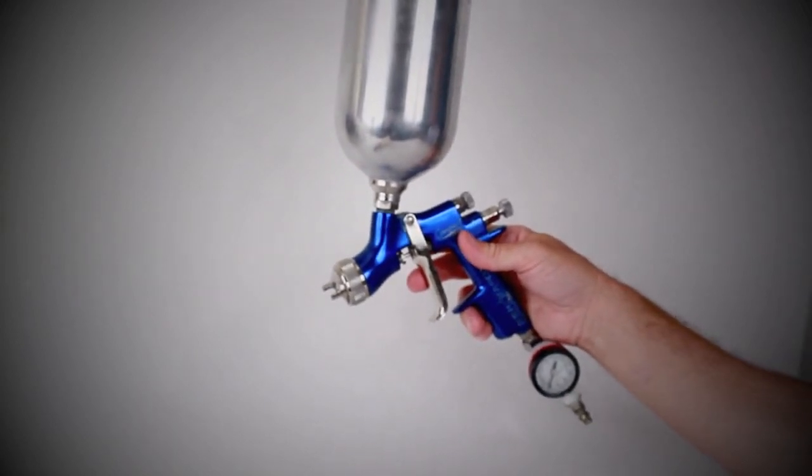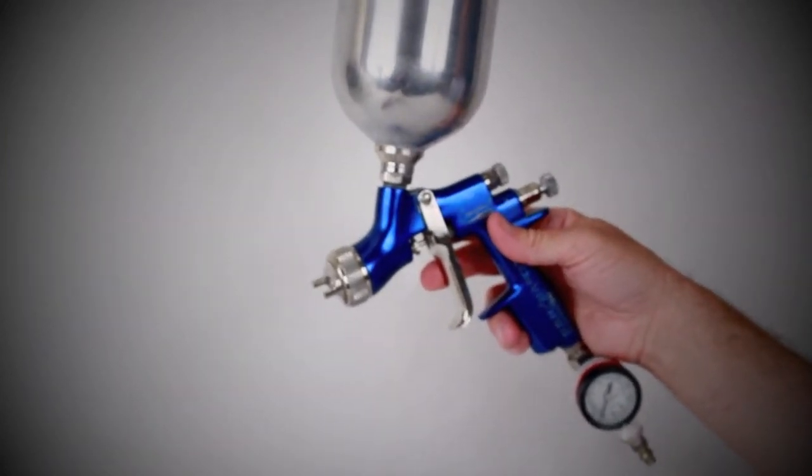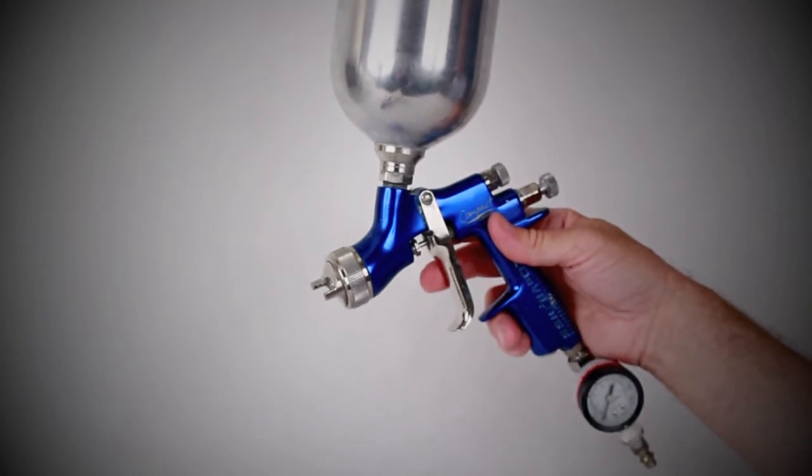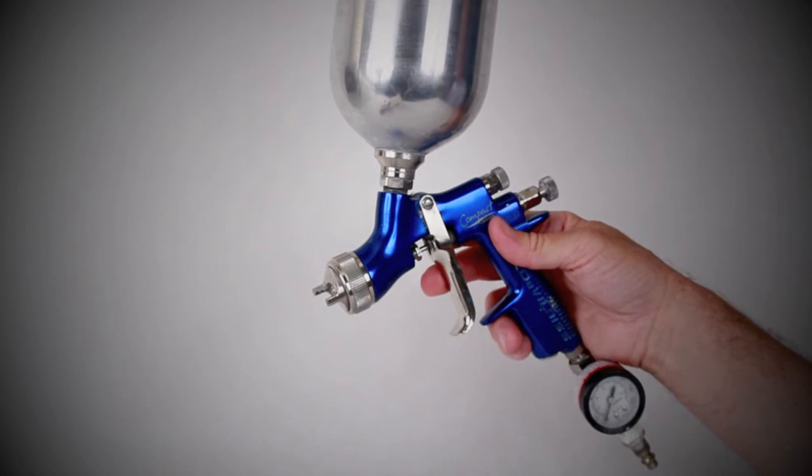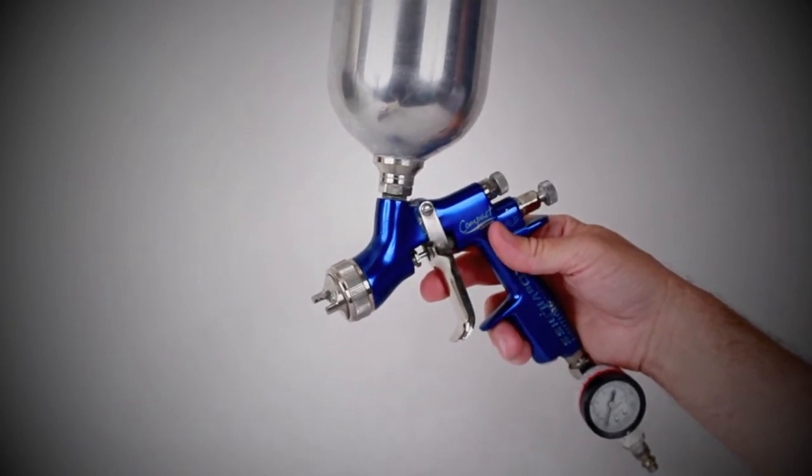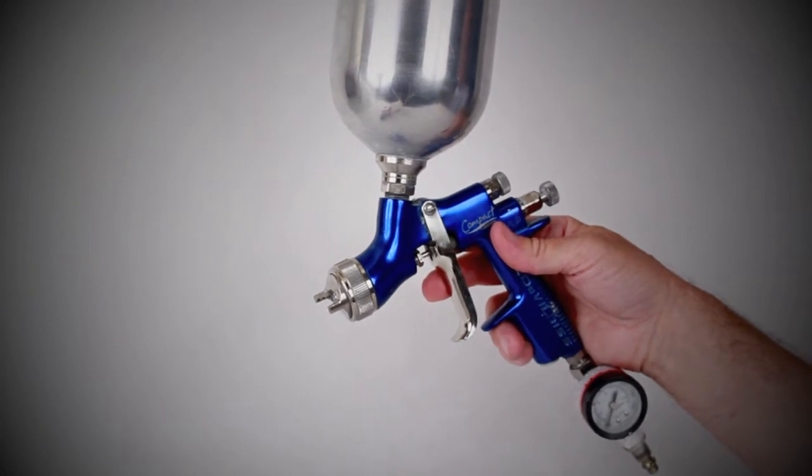This gun has a 2.2 millimeter tip. That's a good general purpose size for spraying Duratec, and we've been able to spray the Duratec primers through this gun without requiring any thinner. This gun also has a control for fan geometry, that's on the top, and just below it is the needle control for break up air and breaking up the spray of Duratec.